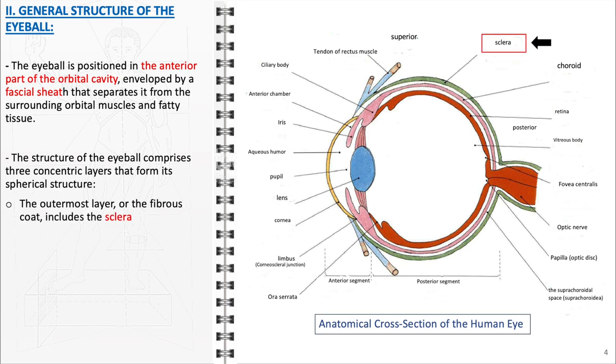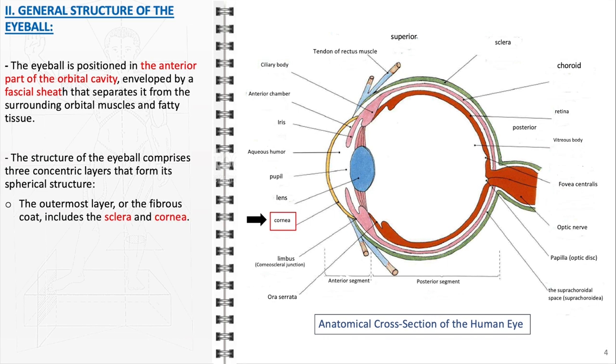The outermost layer, or fibrous coat, includes the sclera and the cornea. The sclera, known for its toughness, forms the white of the eye and offers protection and structural integrity. The cornea, clear and convex, serves as the eye's primary light-focusing element.